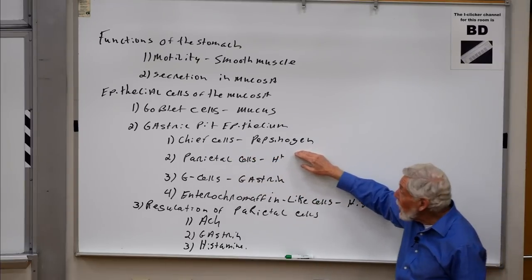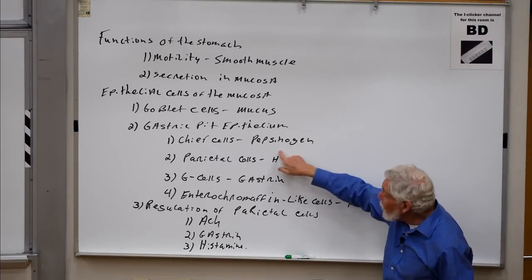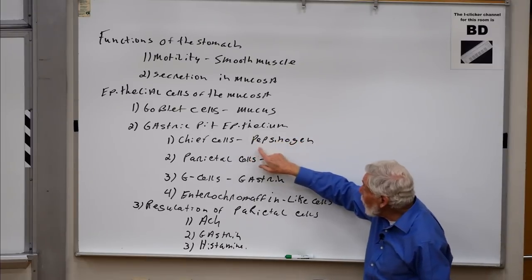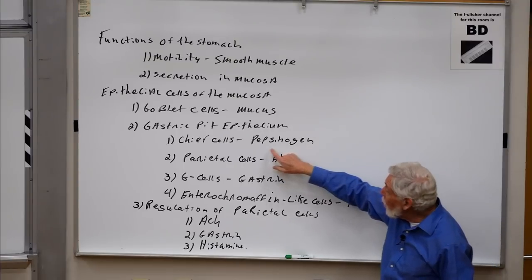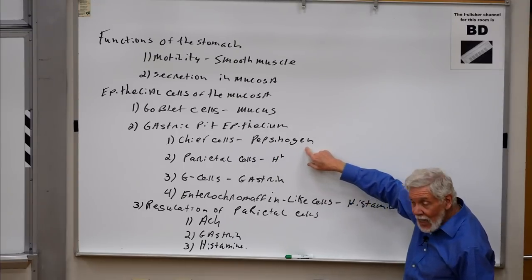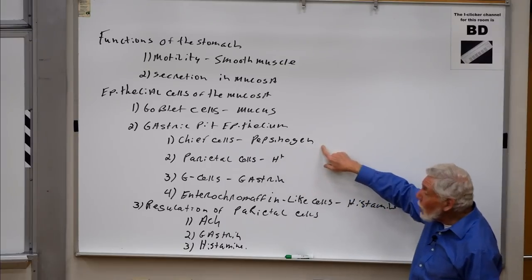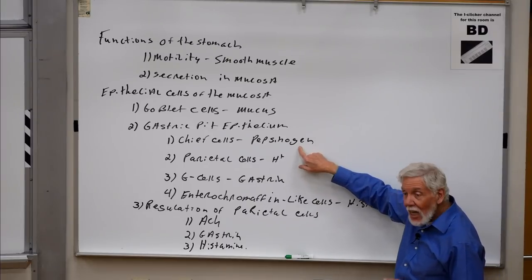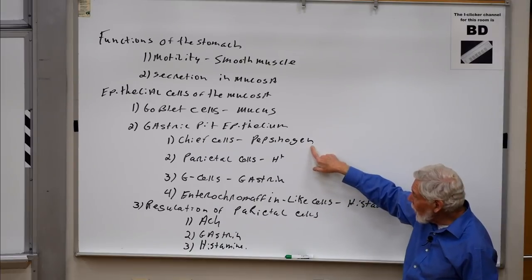The function of the chief cell is to release a molecule called pepsinogen. The suffix -ogen means it's an inactive precursor — we saw this with angiotensinogen. Pepsinogen doesn't digest anything, but once it gets out into the lumen, it's converted into an active component called pepsin. Pepsin is a proteolytic enzyme capable of converting proteins into peptides.